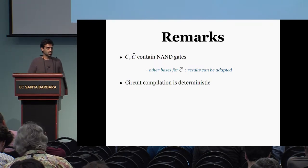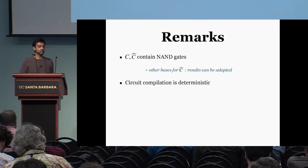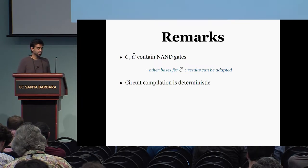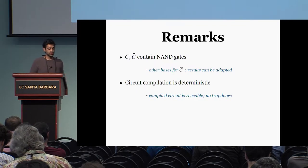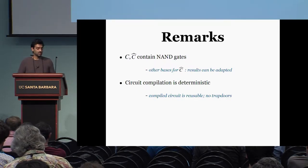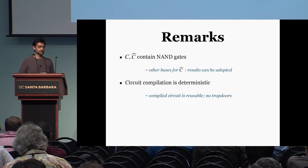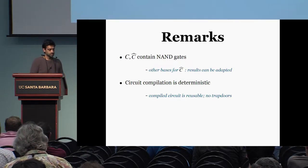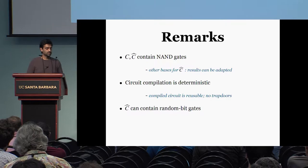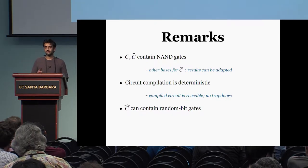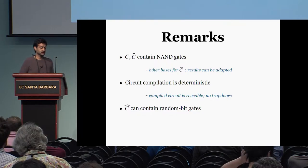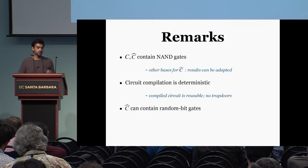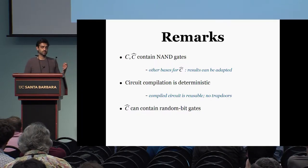We only consider the setting when the circuit compilation algorithm is deterministic. The reason to study this is because we can use the compiled circuit multiple times, and there are no hidden trap doors, so modeling adversaries is also very clean. We also allow C-hat to contain random bit gates — gates where if you invoke them, you get a random bit as output.